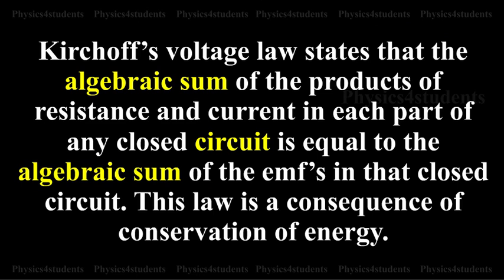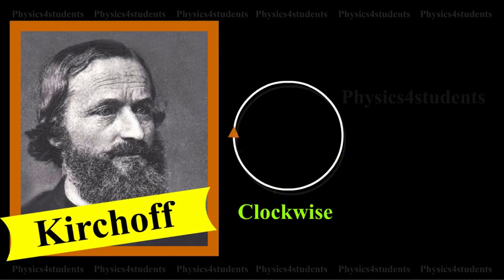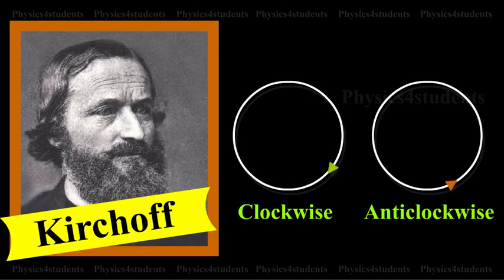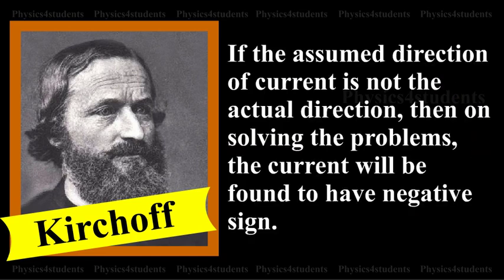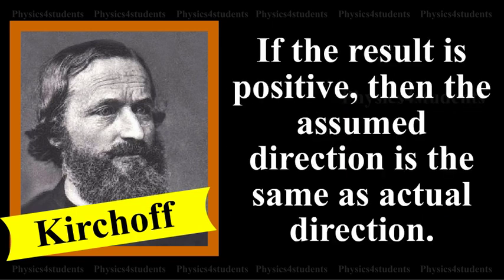In applying Kirchhoff's laws to electrical networks, the direction of current flow may be assumed either clockwise or anticlockwise. If the assumed direction of current is not the actual direction, then on solving the problems, the current will be found to have a negative sign. If the result is positive, then the assumed direction is the same as the actual direction.